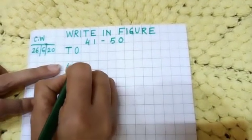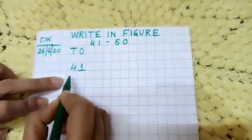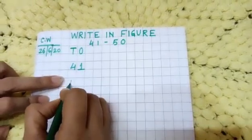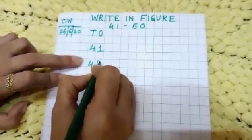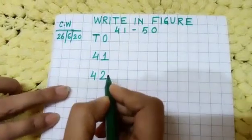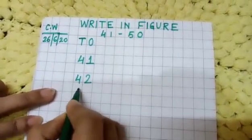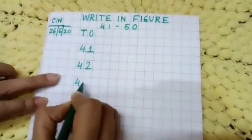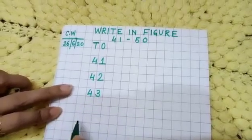4, 1, 41. Then leave the box, 4, 2, 42. Leave the box, 4, 3, 43.